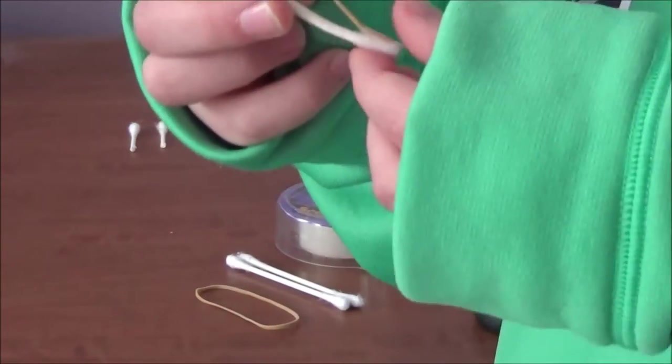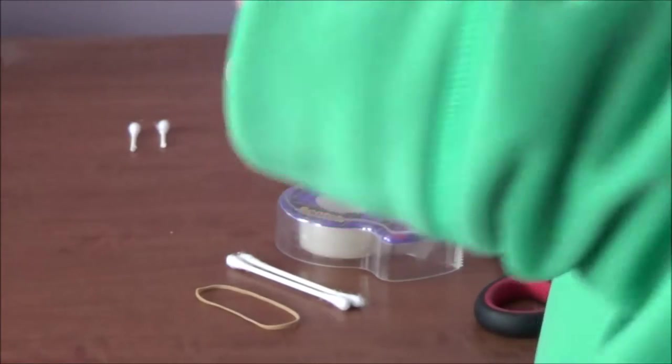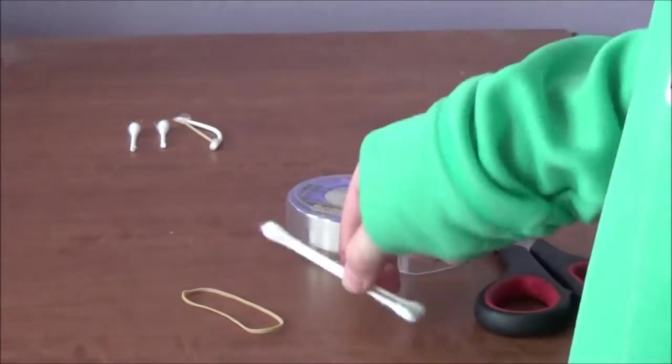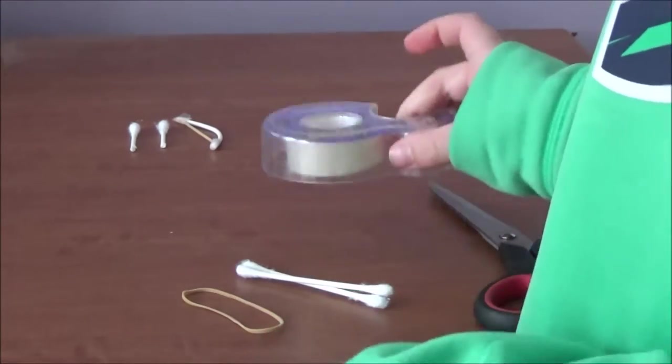Today we are going to make a mini bow and arrow just with a rubber band, two q-tips, tape and scissors.